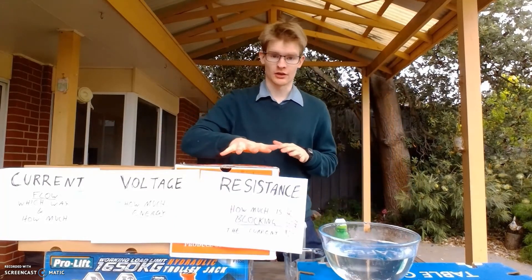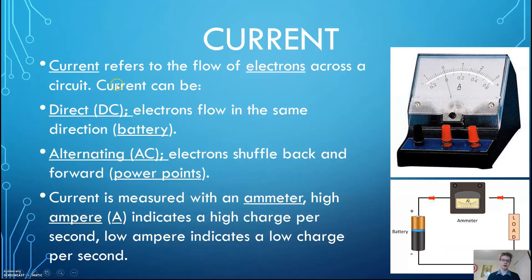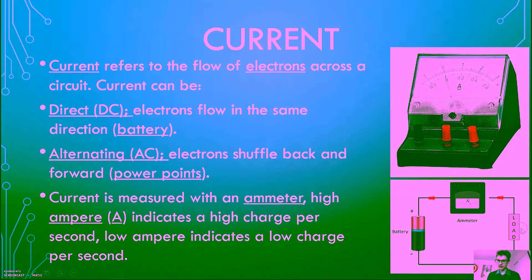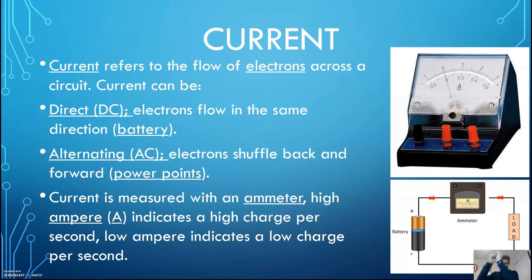Now I'm going to flesh them out a little bit more with this PowerPoint, so get out your notes. Like I said before, current is the flow of electrons across a circuit. Current electricity doesn't work unless you have a circuit — if this circuit is disconnected, the electrons can't flow through anymore. Now we've got two types of currents: direct current and alternating current. Direct current refers to when the electrons flow all the way around the circuit like a circle. Alternating current is when they just shuffle back and forth throughout the circuit. So those are the two ways that current can flow.